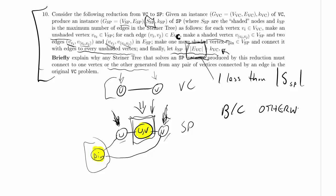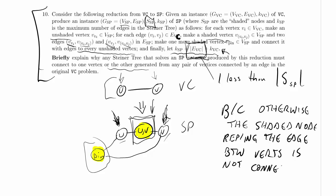the shaded node representing the edge between the vertices